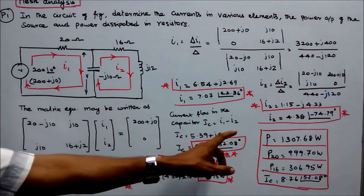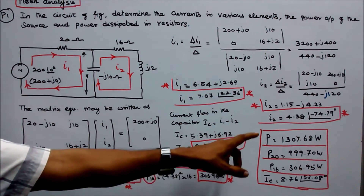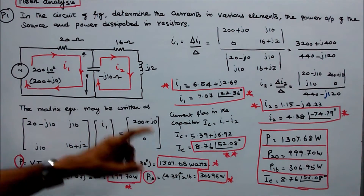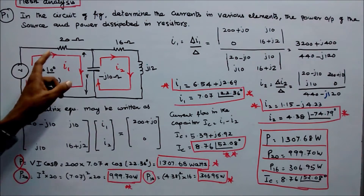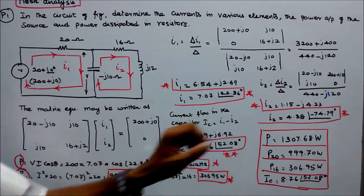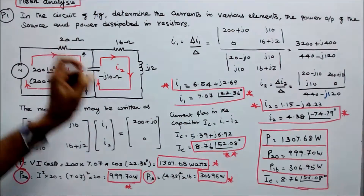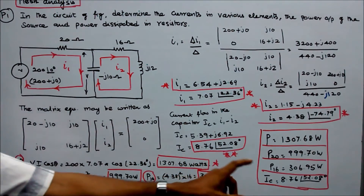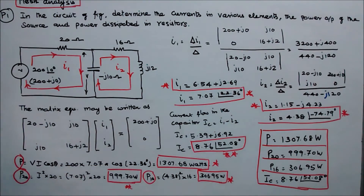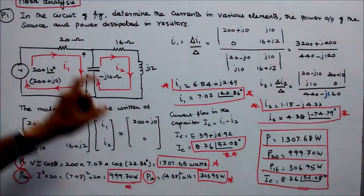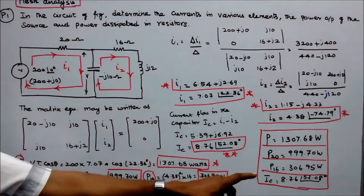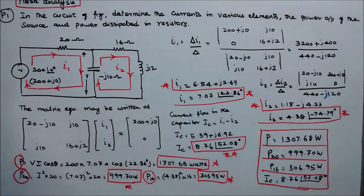Summary for problem one: Power output P = 1307.68 watts. Power dissipated in the 20 ohm resistor = 999.70 watts. Power dissipated in the 16 ohm resistor = 306.95 watts. Current through the capacitor = 8.76 angle 52.08 degrees.